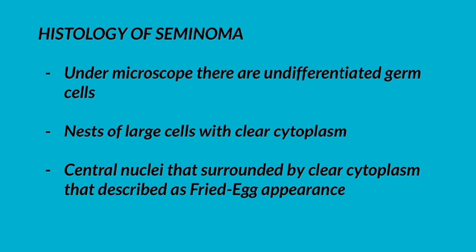Histology of seminoma: under the microscope, there are undifferentiated germ cells — nests of large cells with clear cytoplasm and central nuclei surrounded by clear cytoplasm, described as a fried egg appearance.